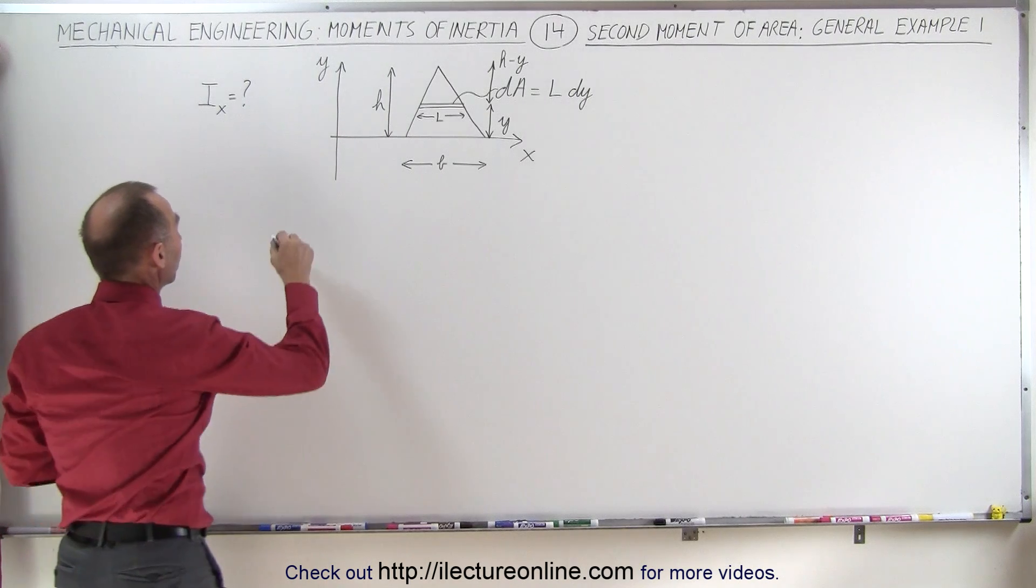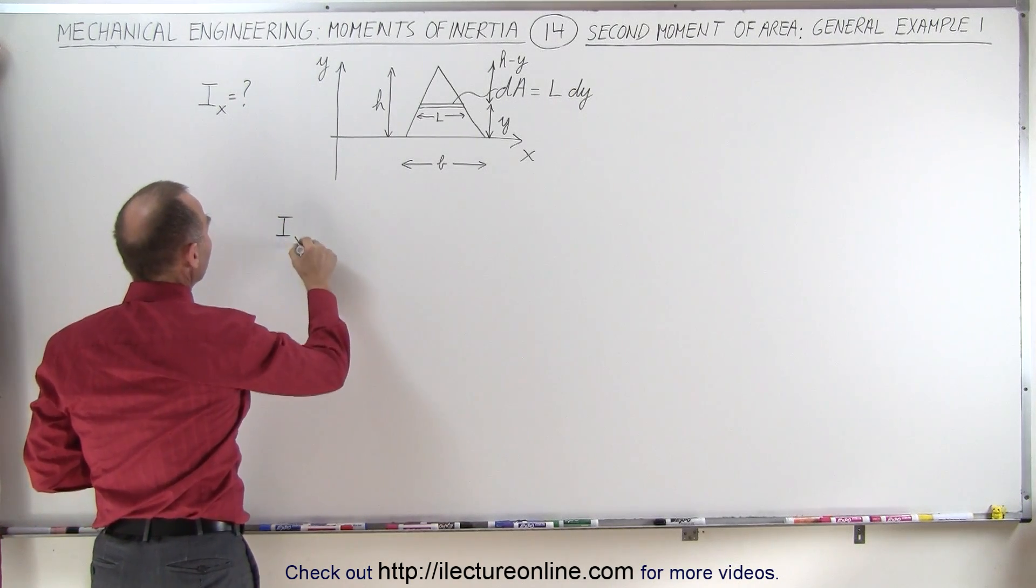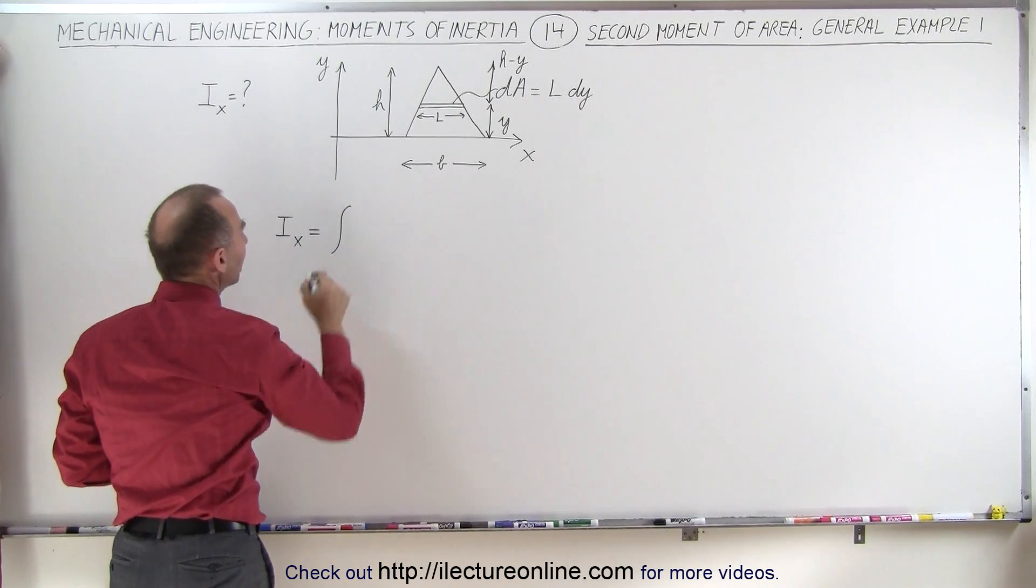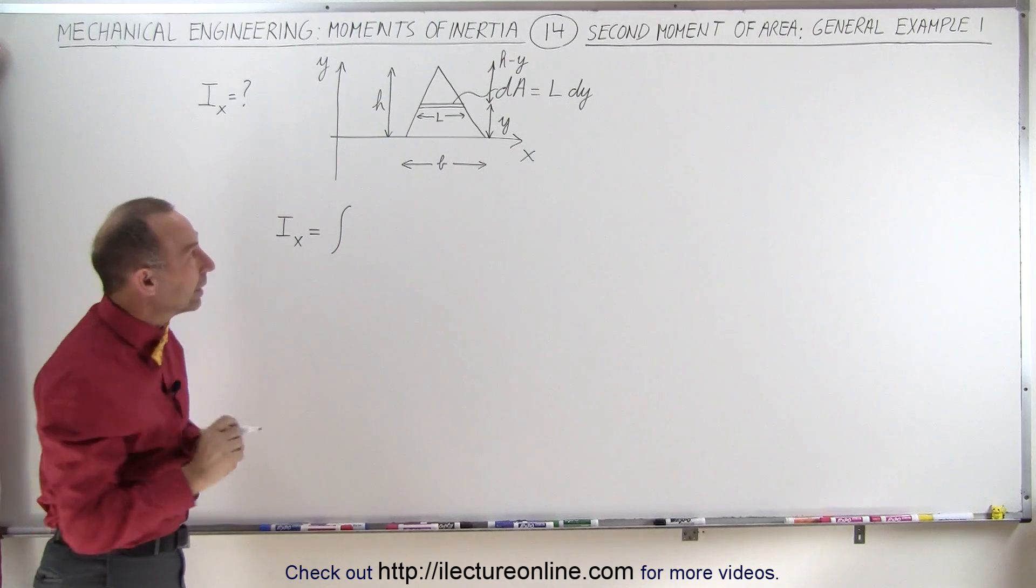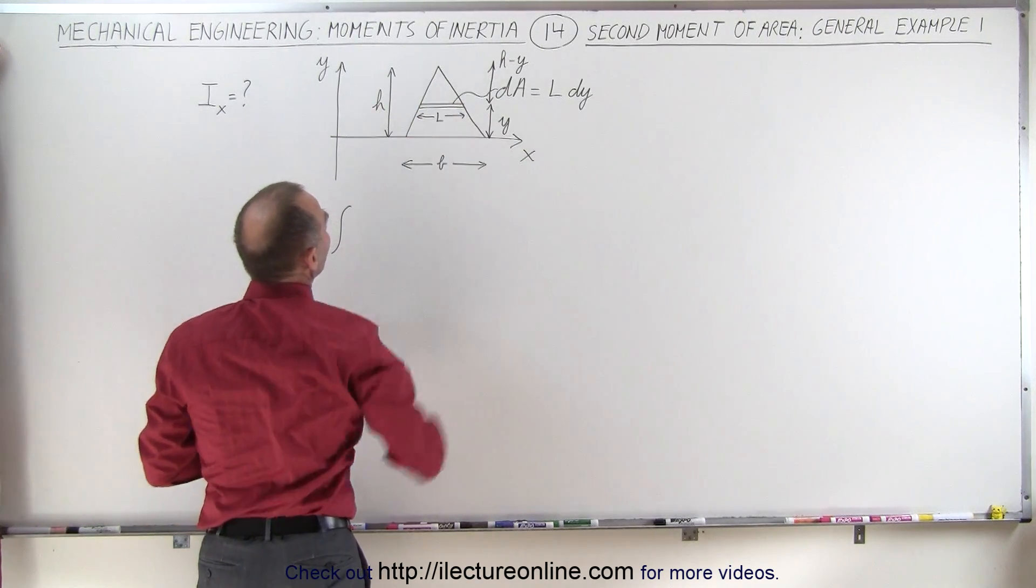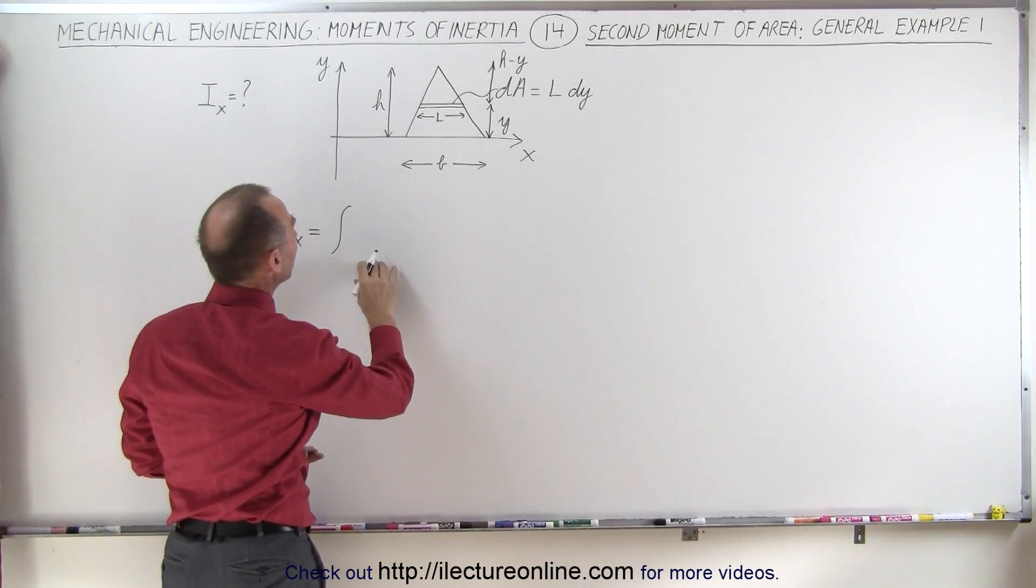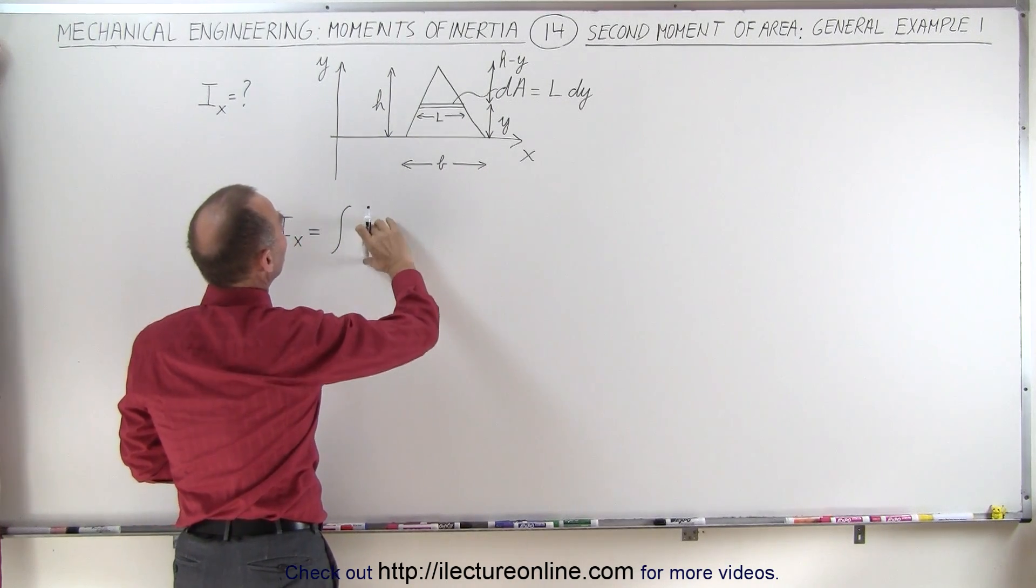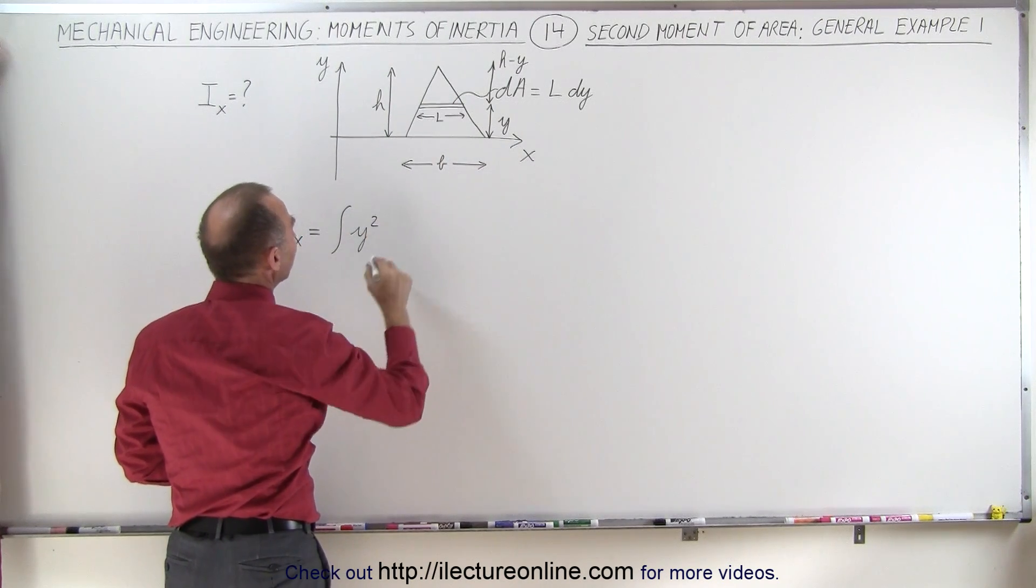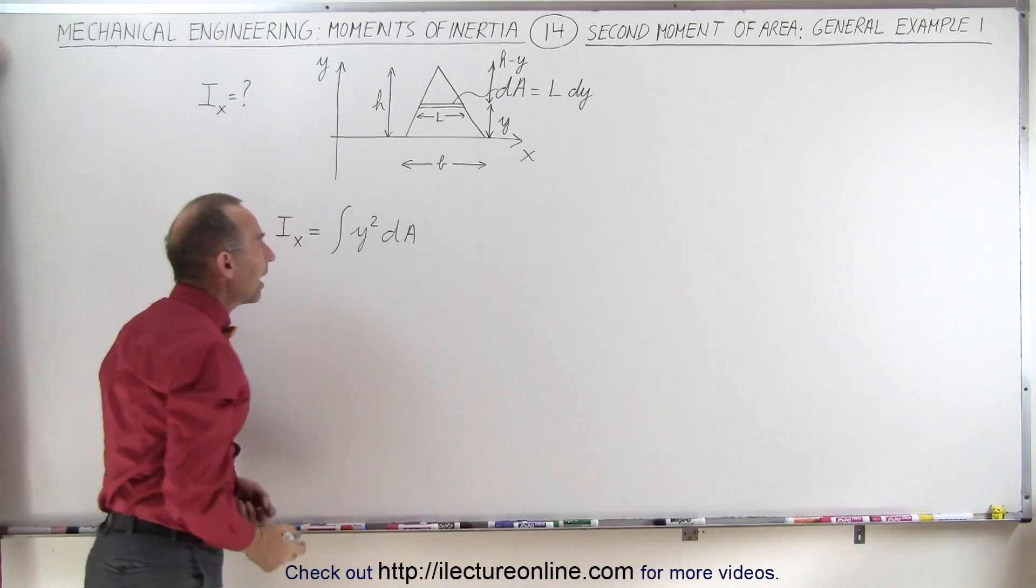But the equation, of course, is going to be i, which is the second moment of area with respect to the x-axis, is equal to, typically we need a double integral. But here we're only going to need one integral because we already have an area element that spans the full width of the triangle, so a single integral will work. So we have the distance to the x-axis, which is y squared times dA. Now, dA is going to be L times dy.